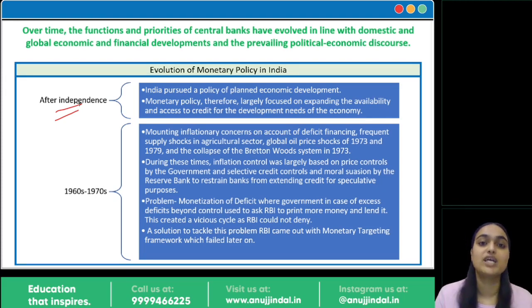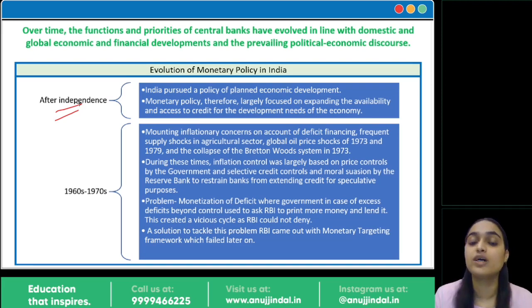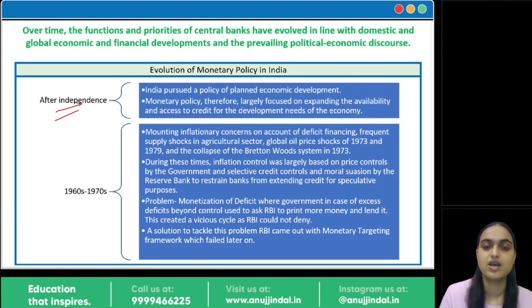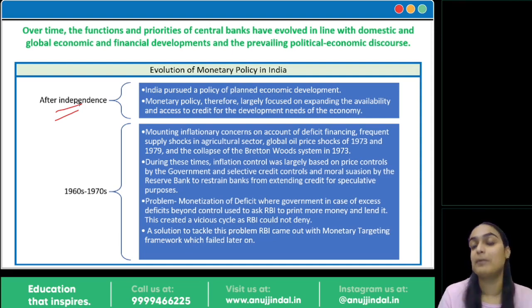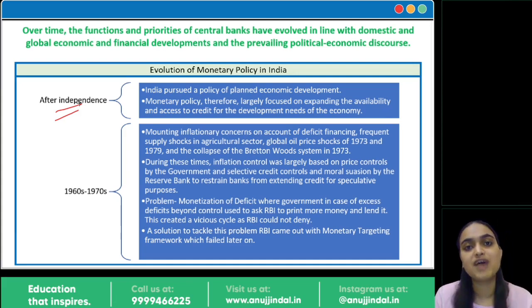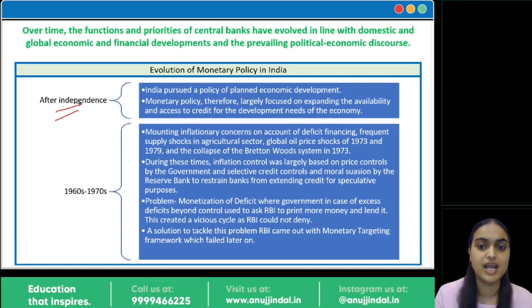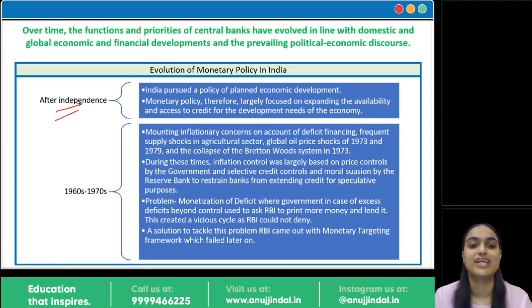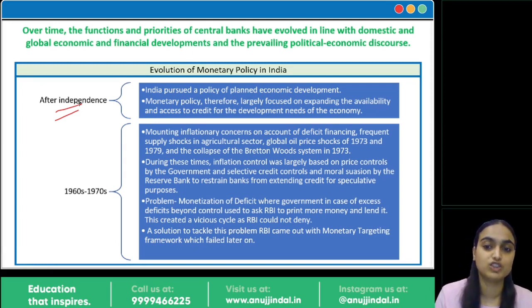Over time, as the government undertook more development projects, expenditures exceeded revenues, leading to large deficits. To finance these deficits, the government was dependent on RBI, which printed more money to lend to the government — this was the deficit financing problem. Moreover, in the 1960s and 70s, various factors contributed to inflation: supply shocks in agriculture, global oil price shocks in 1973 and 1979, and the collapse of the Bretton Woods system in 1973, which linked currencies to the US dollar pegged to gold. Countries shifted to a floating exchange rate system.